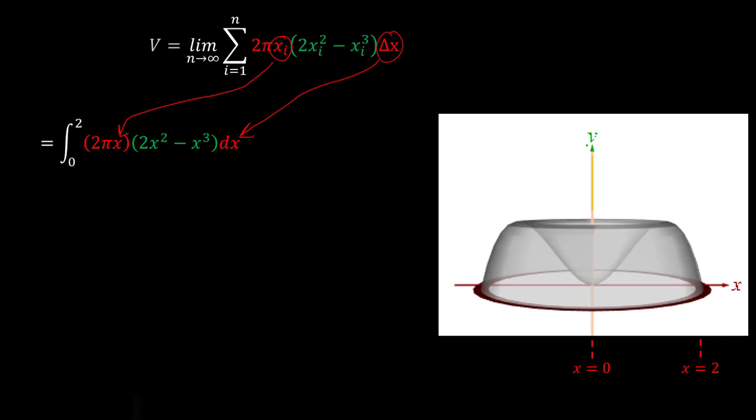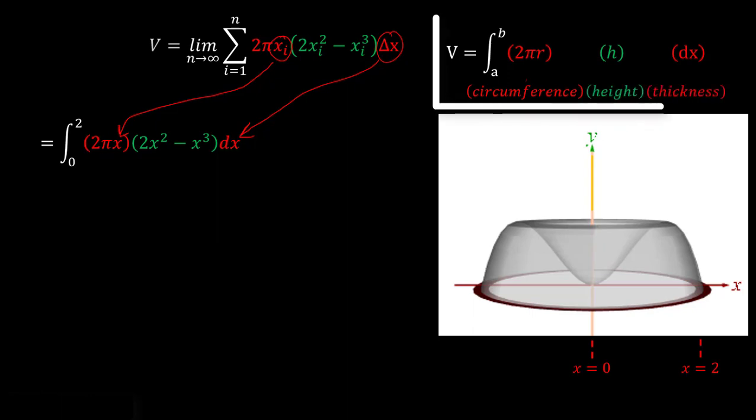So now all we really have to do is go ahead and evaluate this. But before we do, it's worth just mentioning what our general equation, this is specifically for this function here, but more generally the formula that we use for the shell method is given as the integral from a to b of 2 pi r times our height times dx. And of course recall that 2 pi r was our circumference, h was our height, and dx was the thickness of a given shell.